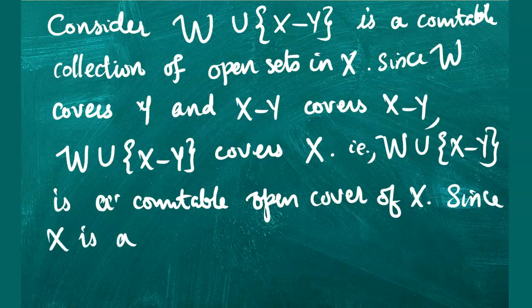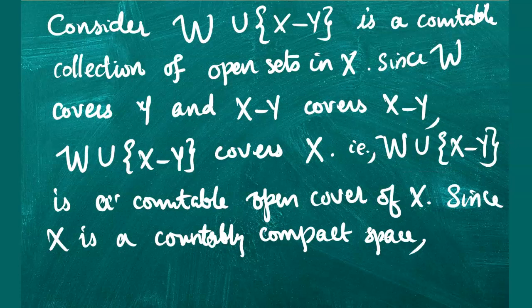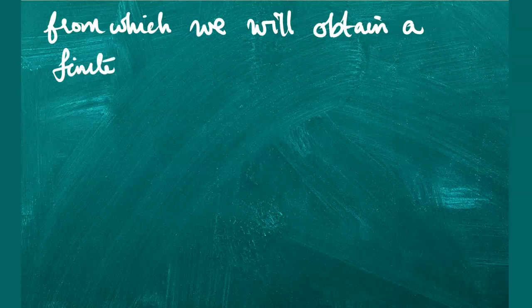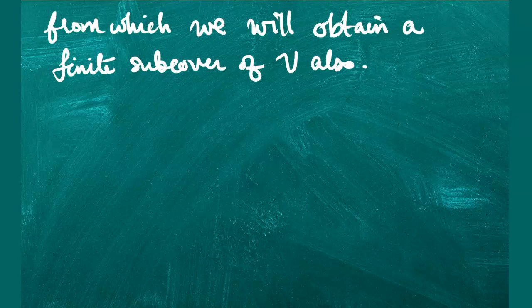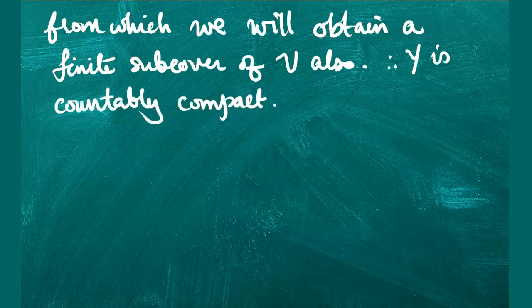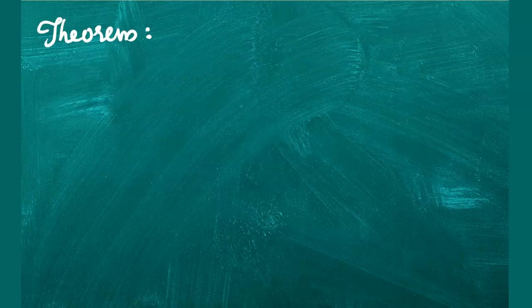Since X is countably compact, this collection has a finite sub-cover, from which we can obtain a finite sub-cover of V as well. Thus every countable open cover of Y has a finite sub-cover. Therefore Y is countably compact, and we conclude that every closed subspace of a countably compact space is countably compact — that is, countable compactness is weakly hereditary.